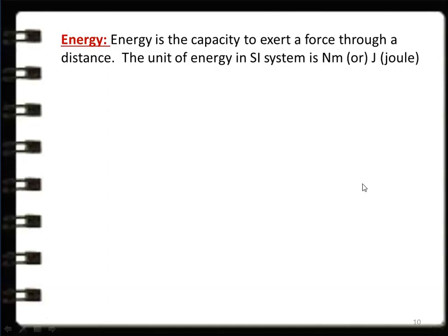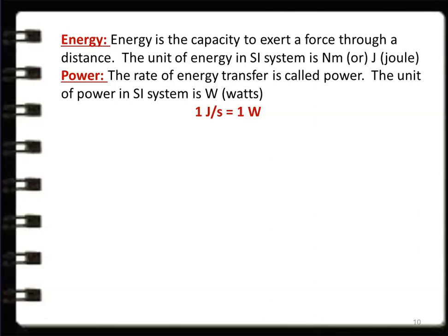Energy is defined as the capacity to do work — the capacity to exert force through a distance. Energy equals force times distance. Power is the rate of energy transfer. The SI unit for energy is newton-meter or joule (1 N·m = 1 J), and the unit of power is watts or joules per second.